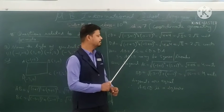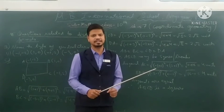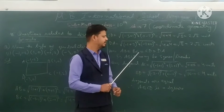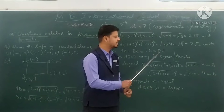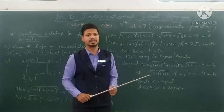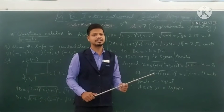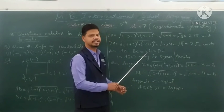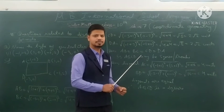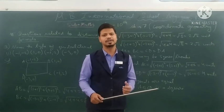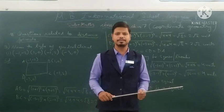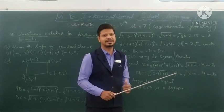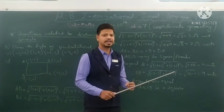Observe: AB, BC, CD, and DA — all four lengths of the sides of quadrilateral ABCD are equal. Since all four sides are equal, we now need to check the diagonals to determine the exact type of quadrilateral.